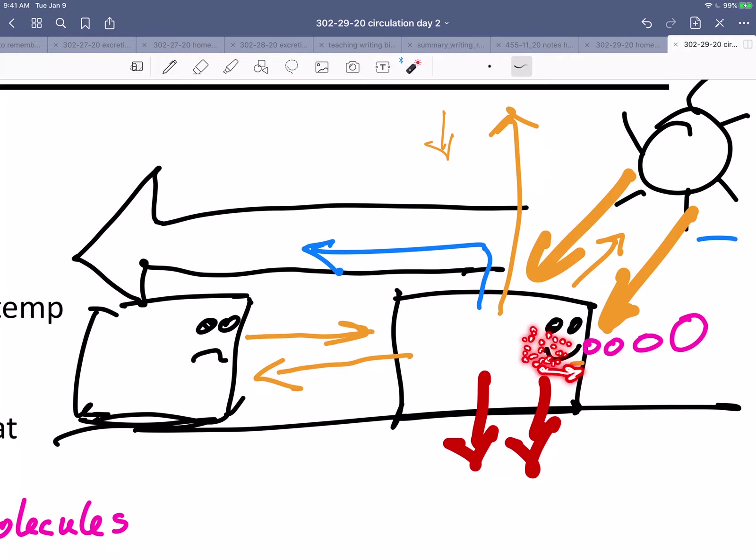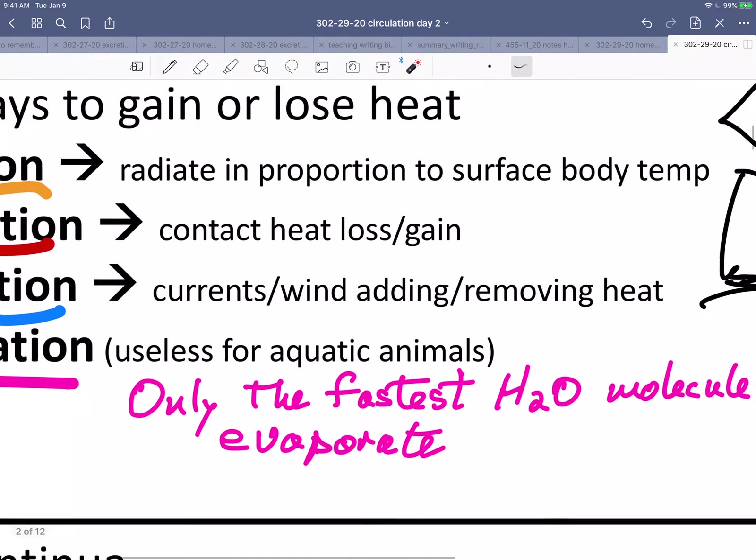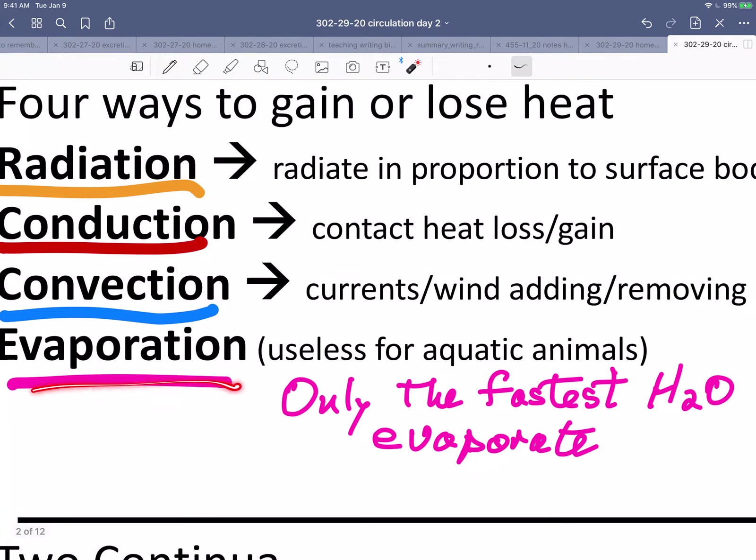Which ones manage to get away? Well, if one of them is moving faster than the others, it's the one that gets out to become water vapor, and it's those fastest moving ones that then get exhaled. Only the fastest water molecules evaporate. And if only the fastest evaporate, then it's going to take away heat because heat is the rate of random molecular motion.